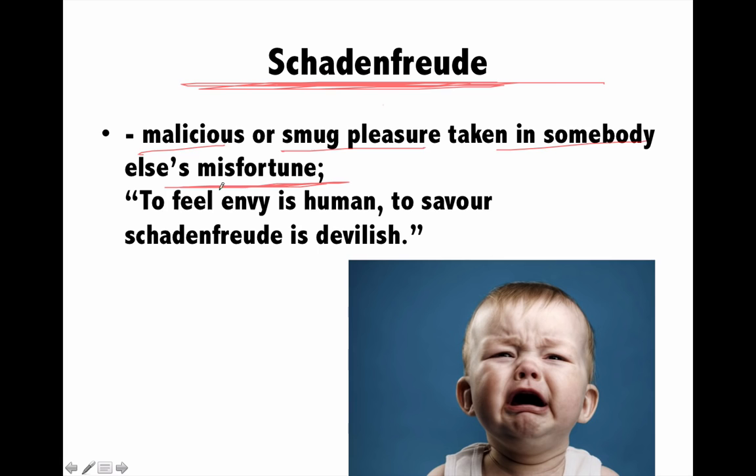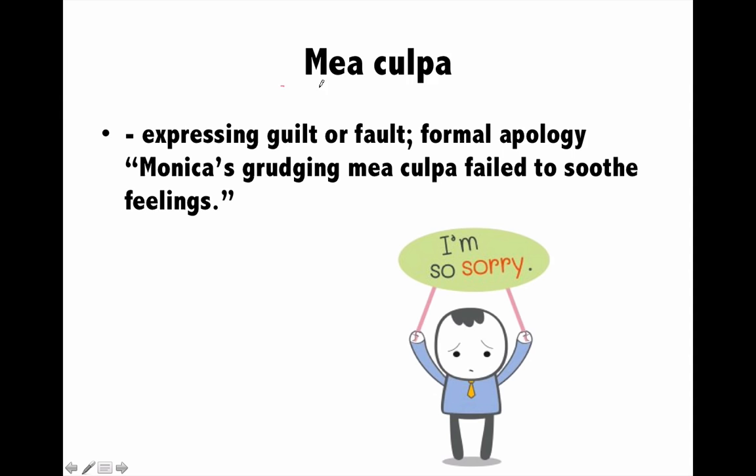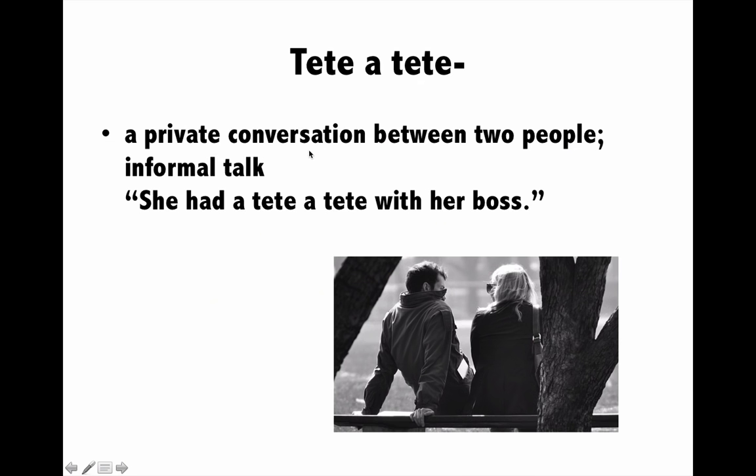Next is 'mea culpa', a beautiful word. Mea culpa means when you say sorry — when you realize you have done a mistake, that you were wrong. You issue a formal apology and express your guilt. That is called mea culpa.